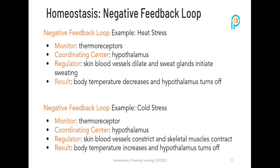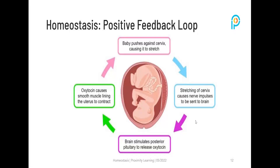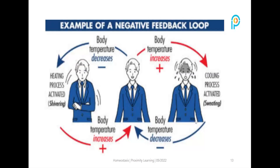The result of the heat stress loop is that body temperature decreases and the hypothalamus turns off. Another example is cold stress: the thermoreceptor monitors, the hypothalamus coordinates, and the skin blood vessels constrict while skeletal muscles contract, causing body temperature to increase and the hypothalamus to turn off. The positive feedback loop example shown was a woman going into labor to have a baby.